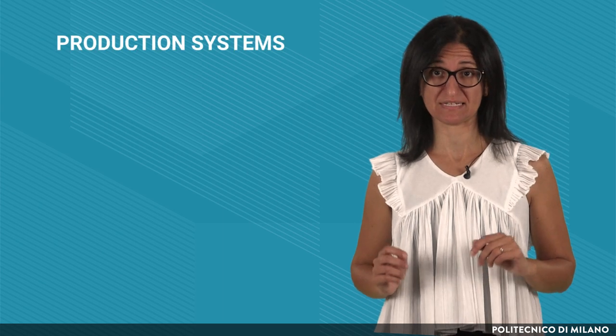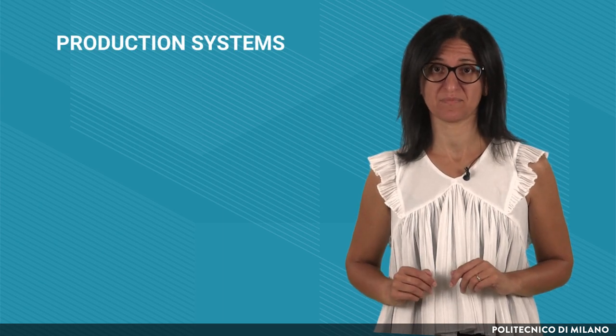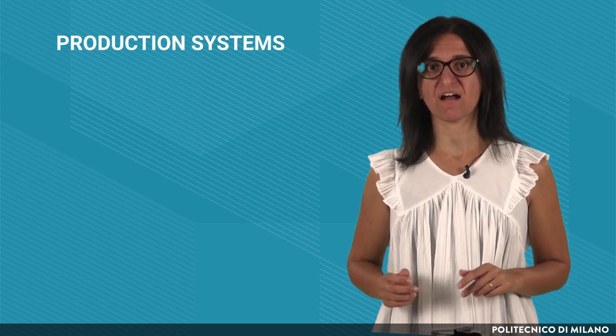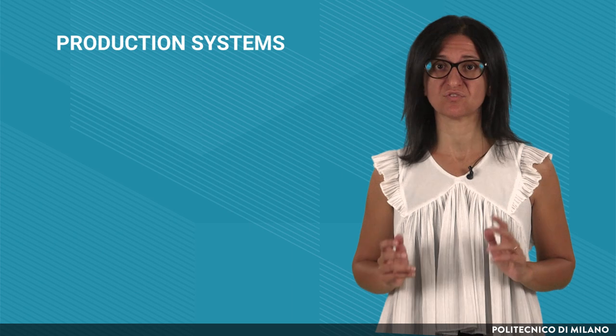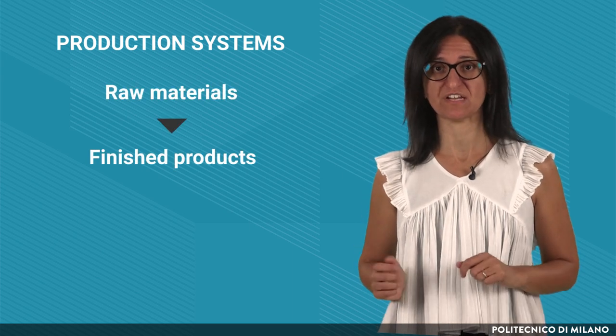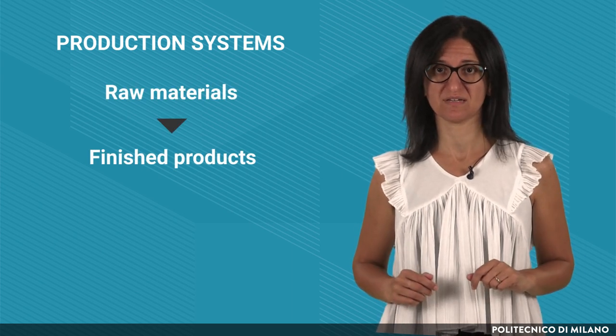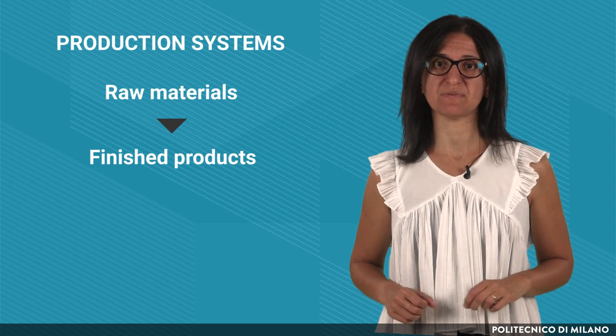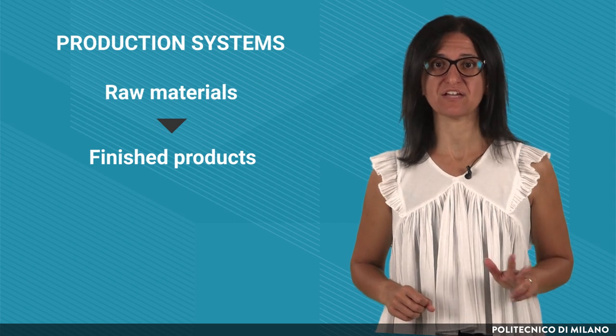In this lecture we are going to have an overview of the main typologies of production systems. Production systems are intended to turn raw materials into finished products. They can be classified based on three dimensions.